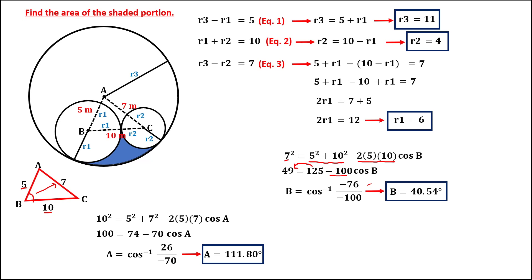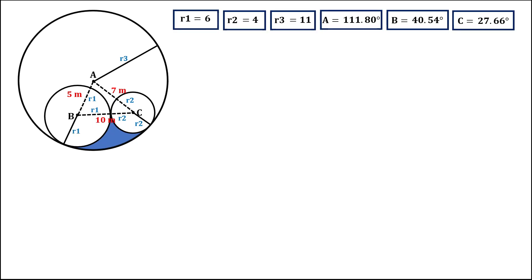To solve for the last angle, angle C equals 180 minus angle A minus angle B, so angle C equals 27.66 degrees. Now that we have all the radii and angles, we can find the area of the shaded portion.